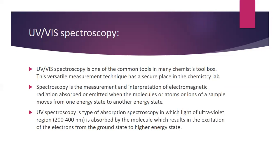When it comes to UV visible spectroscopy, it is one of the common tools in many chemists' toolbox. This versatile measurement technique has a secure place in the chemistry lab. Spectroscopy is the measurement and interpretation of electromagnetic radiation absorbed or emitted when the molecules, atoms, or ions of a sample move from one energy state to another. UV spectroscopy is a type of absorption spectroscopy in which light of the ultraviolet region is absorbed by the molecule, resulting in the excitation of electrons from the ground state to a higher energy state.